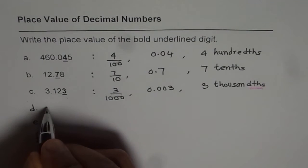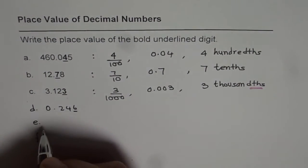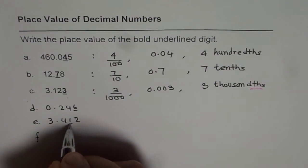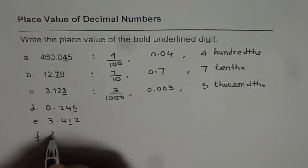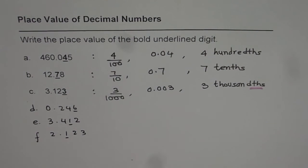So let us say we have 0.246 and 6 is underlined. And then we have 3.412, 1 is underlined. And then we have 2.123 and 1 is underlined for you. So write down these answers and then move on to the next video. Thank you.